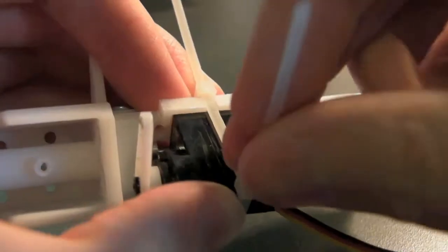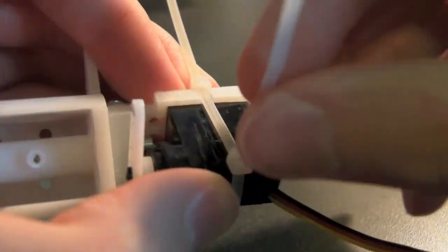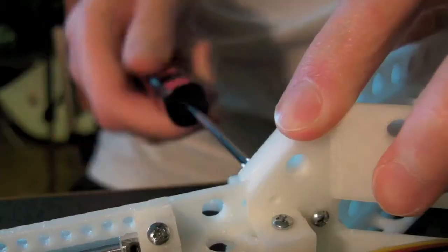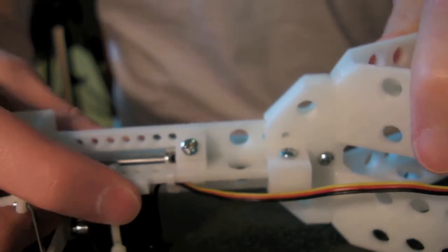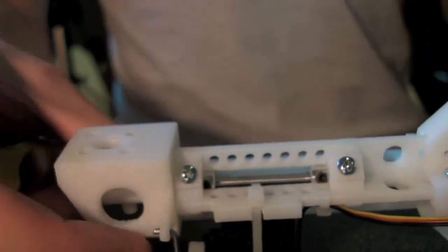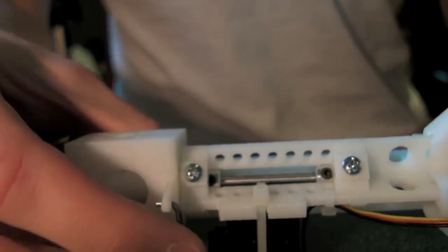Here I'm securing the tail servo using some zip ties. And then mounting the boom onto the main frame. And here it all is after I've installed the control rod from the servo to the mount.